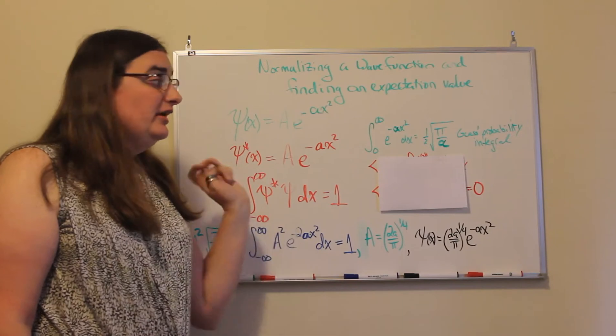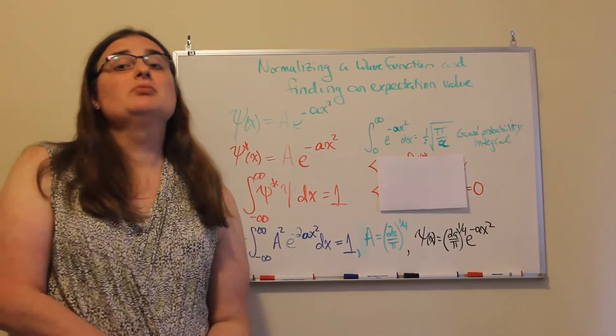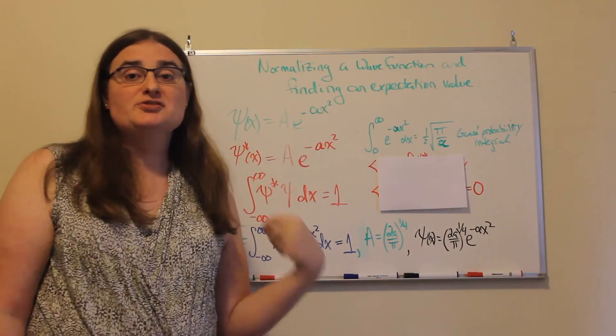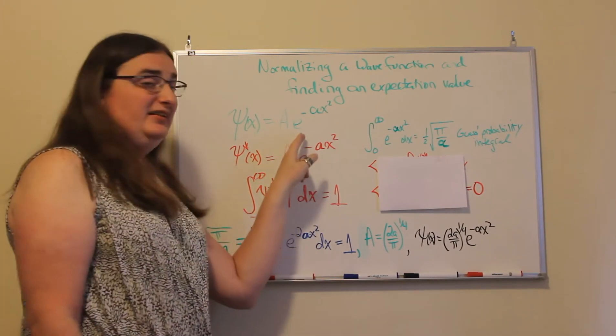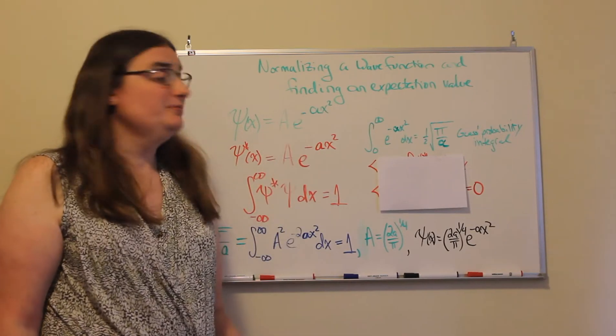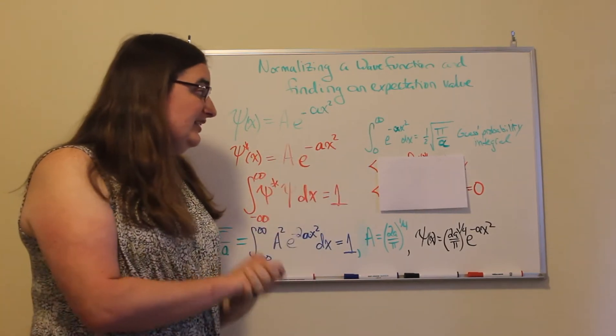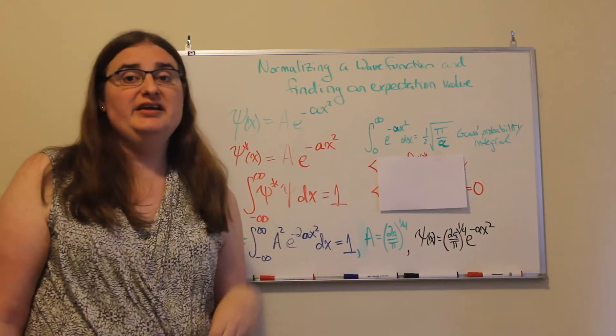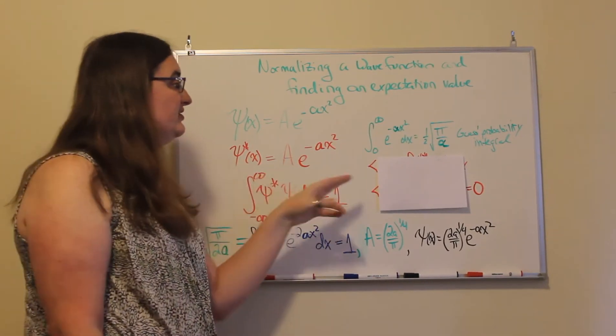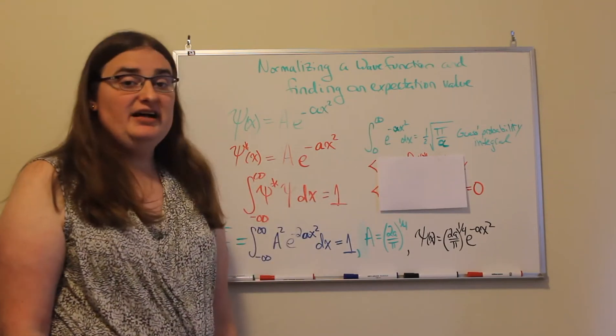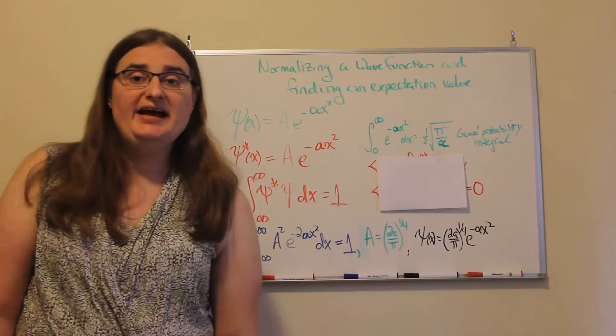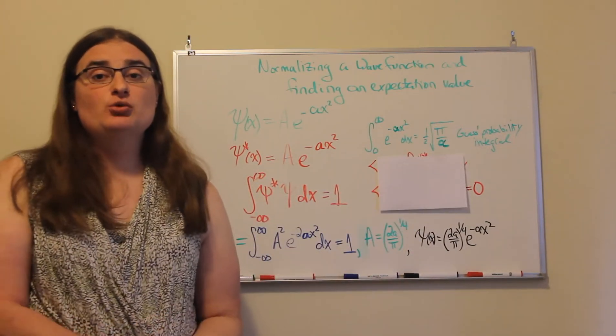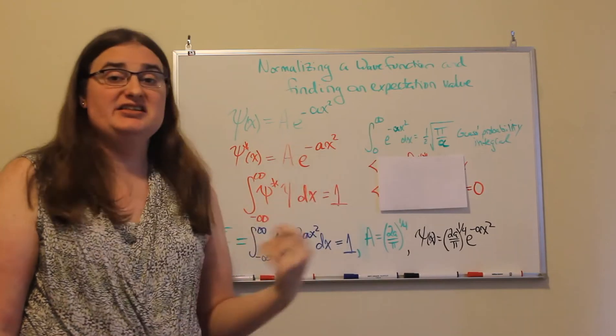Now this integral has a special name. This is a doubling of what's known as Gauss's probability integral, and this is also known as a Gaussian wave function. So Gauss's probability integral says if you calculate from zero to infinity the integral of e to the minus a constant alpha times x squared with respect to dx, the value is going to be one half times the square root of pi divided by that constant alpha.